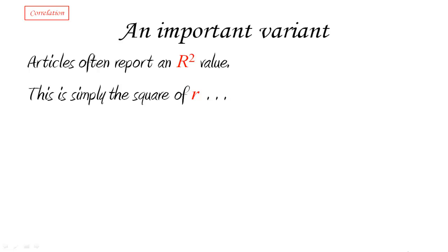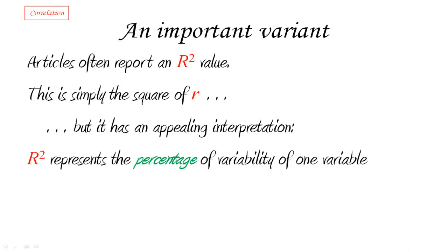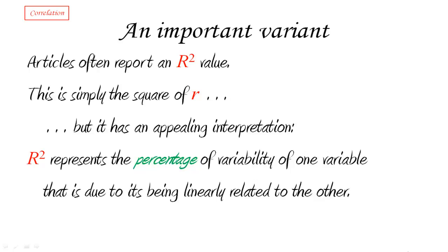So you might wonder what's the point? Well, the point is that this R squared value has a very interesting and appealing interpretation, one that starts giving us some sense about what the correlation coefficient is trying to tell us. The interpretation is the following: This R squared value represents the percentage of variability of one variable that is due to its being linearly related to the other.